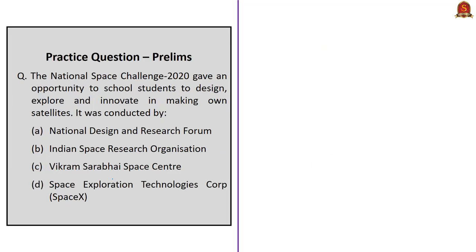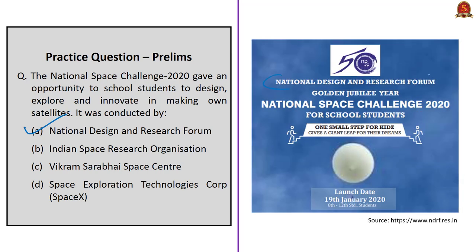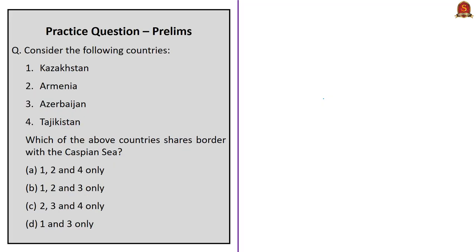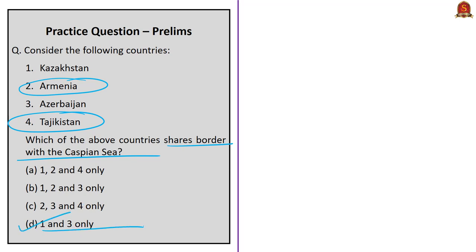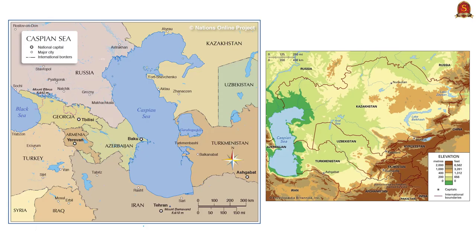This question asks about the National Space Challenge 2020, which gave school students the opportunity to design, explore, and innovate in making their own satellites. The correct answer is option A: the National Design and Research Forum. It was conducted to mark the golden jubilee year of NDRF, with Space Kids India as the launch partner. The final geography map-based question asks which of the given countries share a border with the Caspian Sea. Knowing that Armenia and Tajikistan are landlocked countries, the correct answer is option D: 1 and 3 only — Kazakhstan and Azerbaijan — while Russia, Iran, and Turkmenistan also share a border with the Caspian Sea.